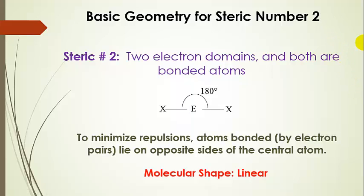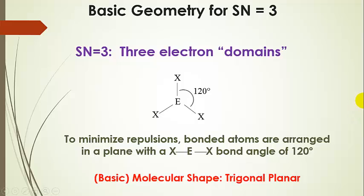For steric number two, we have two electron domains, both bonded atoms, and it is a linear shape. Bonded atoms move as far apart as possible, giving a bond angle of 180 degrees. For steric number three, we have three electron domains and three bonded atoms — the trigonal planar basic geometry — with all bond angles at 120 degrees. They divide the 360 degrees equally, which minimizes the repulsions.